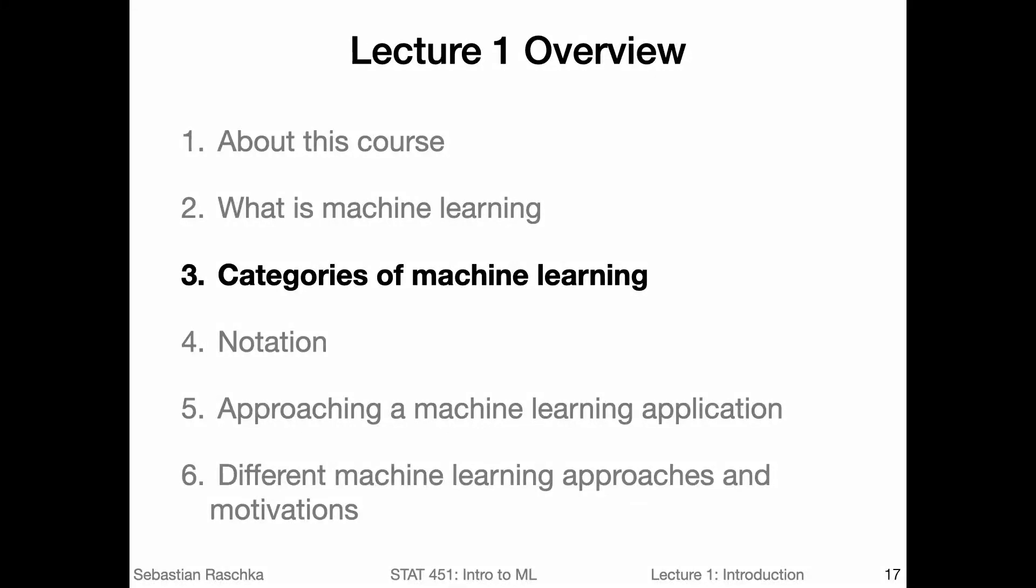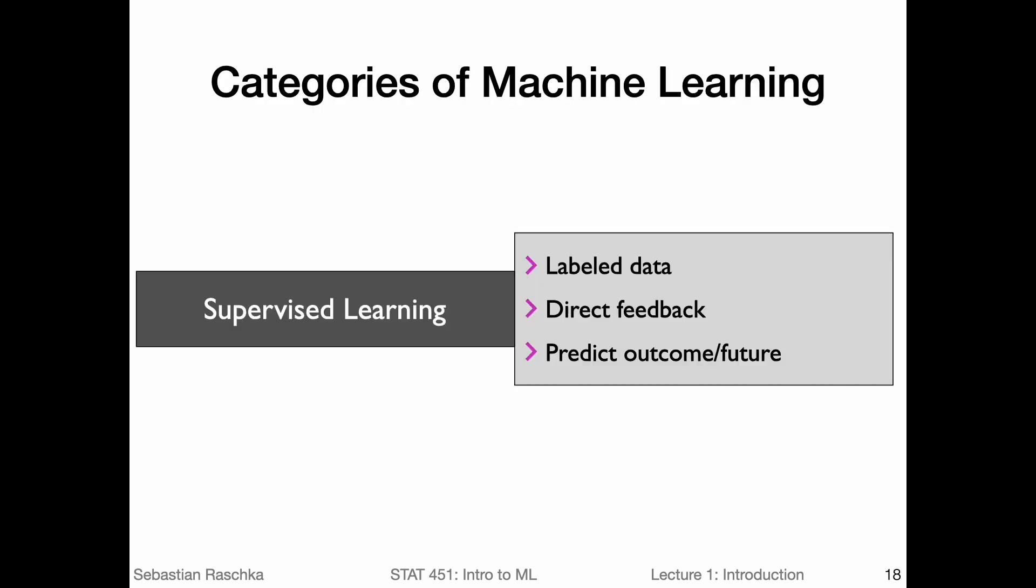So we learned about machine learning. Let's talk a little bit more about the different categories of machine learning or different types of machine learning. The broadest or biggest category of machine learning is supervised learning.